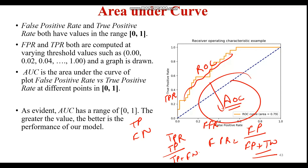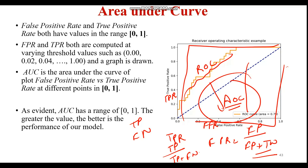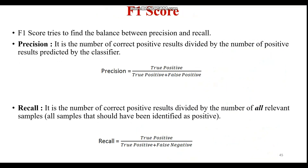AUC calculates the performance across all thresholds and provides an aggregate measure. A value of 0 means 100% wrong predictions, while a value of 1 means 100% accuracy. A detailed video on area under curve is available; this video only covers a brief introduction.